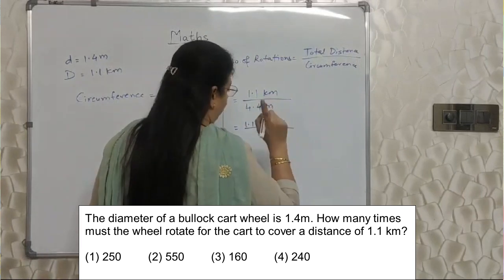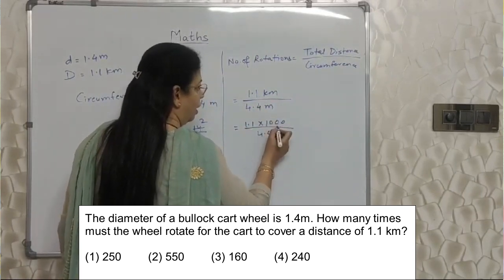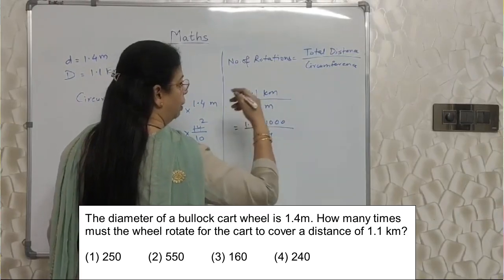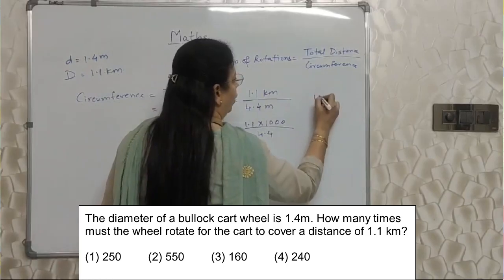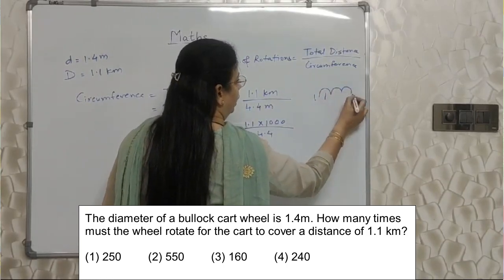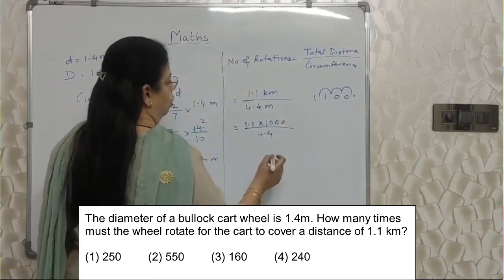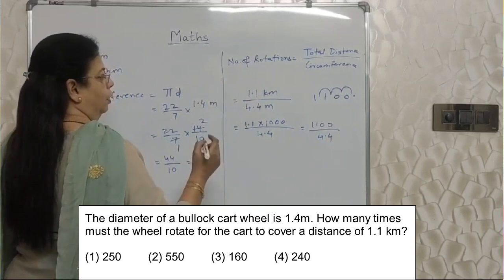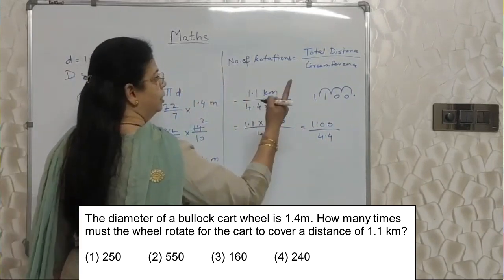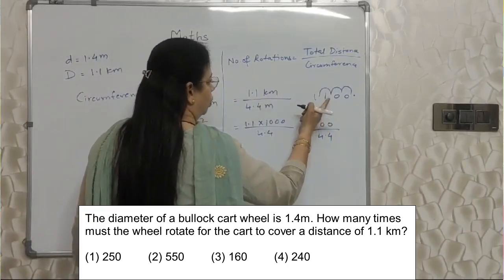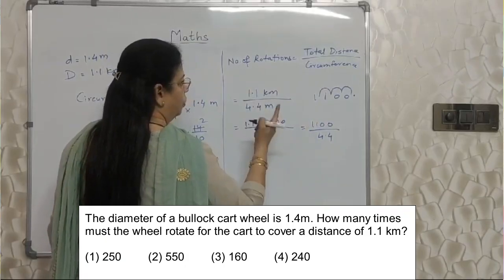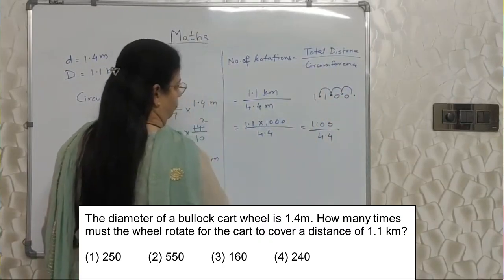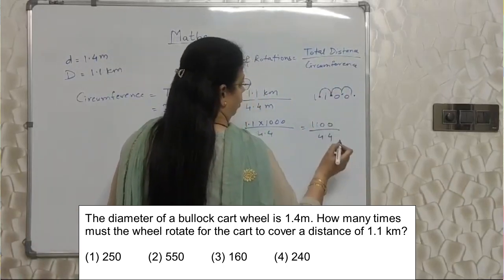Whenever a decimal number is multiplied by 1000, 100, or 10, the number of zeros is very important. Here there are 3 zeros, so the decimal will jump to the right 3 times. So 1.1 becomes 1100. You need to fill up places with 0. So the multiplication gives 1100 upon 4.4.